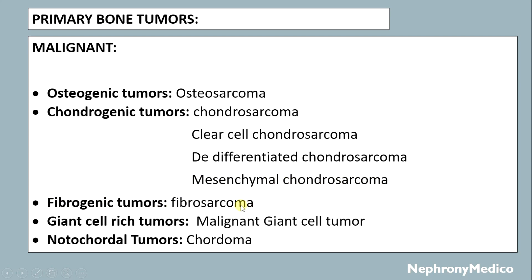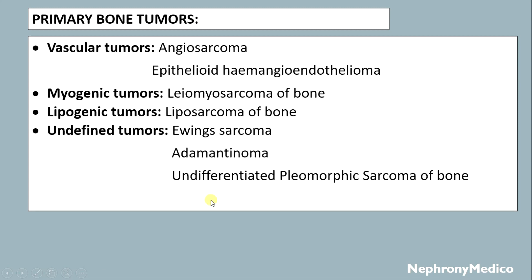Fibrogenic tumors like fibrosarcoma; giant cell-rich tumors like malignant giant cell tumor; notochordal tumors like chordoma; vascular tumors like angiosarcoma, epithelioid hemangioendothelioma; and myogenic tumors like leiomyosarcoma of bone; lipogenic tumors like liposarcoma of bone.